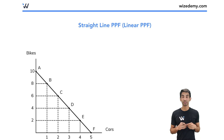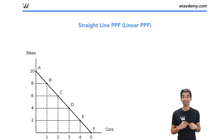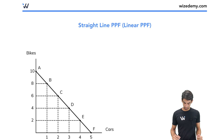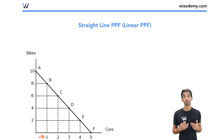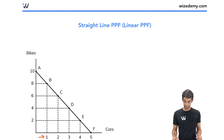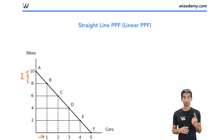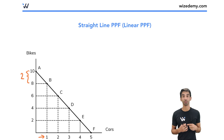The first thing is: what is the opportunity cost on this graph? Well, if we want to go from point A to point B, we are making one extra car — from zero to one. How many bikes do we have to give up from point A to point B? It's 2, from 10 to 8. That is the opportunity cost of making that first extra car — we have to give up two bikes.